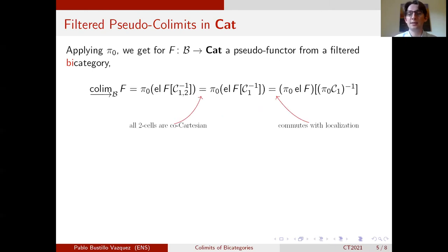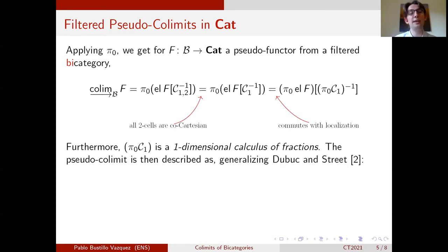And the first simplification we can make is that it's not necessary to localize at the two cells. And then we can also say that pi zero actually commutes with the localization by looking at the universal property. And this tells you that the colimit can be computed using only one-dimensional calculus of fraction as developed by Gabriel and Zisman.